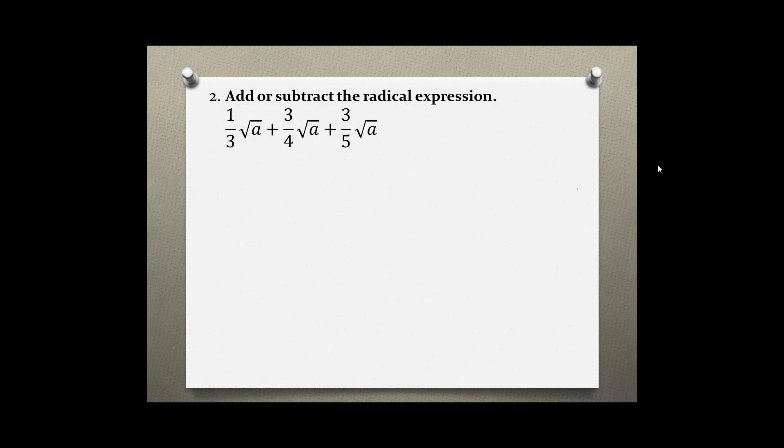The radical is the same in each term, a, and the index is also the same in each term, which is 2. Therefore, we can go ahead and just add all the coefficients, which are the numbers in front of the radical, together.